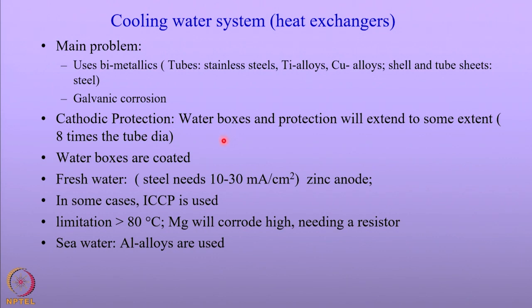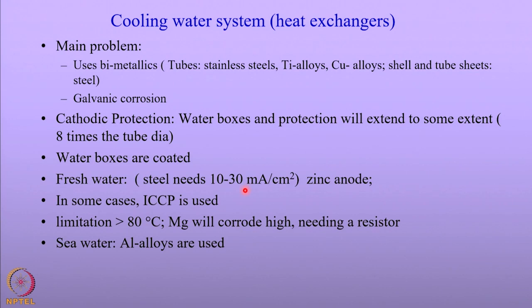The cathodic protection is generally done in the water boxes, and the protection will extend into the tubes to about 8 times the tube diameter. So galvanic corrosion in that location is significantly reduced. The water boxes are generally coated, and for fresh water, the current required lies in the range of 10 to 30 milliampere per centimeter square, and zinc anodes are generally used.